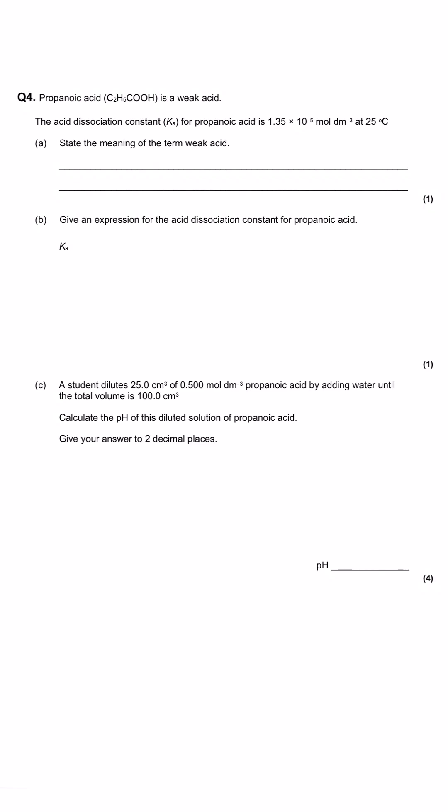Propanoic acid is a weak acid. The acid dissociation constant, Ka for propanoic acid, is 1.35 times 10 to the minus 5 moles per decimetre cubed at 25 degrees C. State the meaning of the term weak acid.